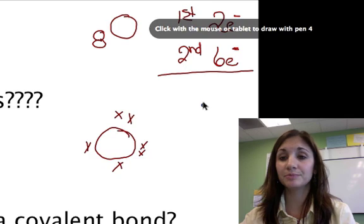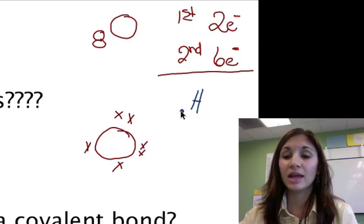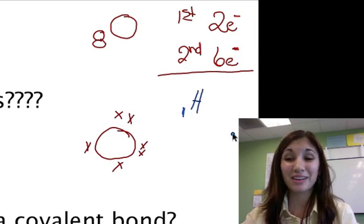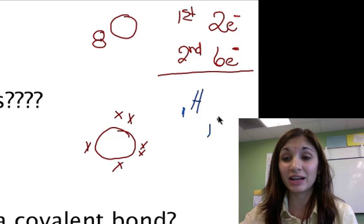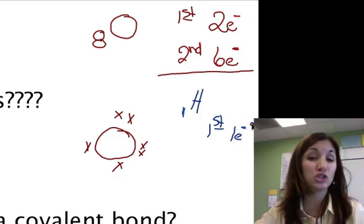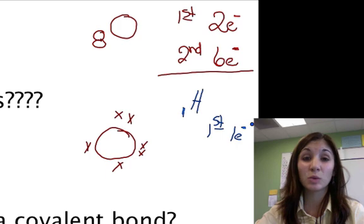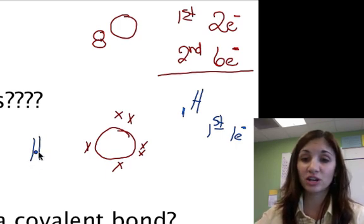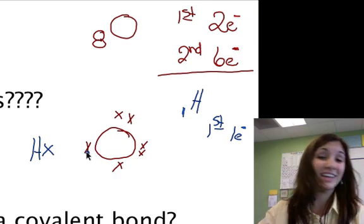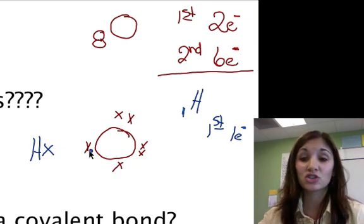Hydrogen, on the other hand, its atomic number is one. So it only has one energy level. And in its first energy level, it has one electron. Recall that the first energy level is small, so it only needs two to be stable. It needs one more electron. So if I were to draw my hydrogen, here's its one lonely electron. Hydrogen needs one more. Oxygen needs one more. They say, hey, why don't we share? So what forms? A covalent bond.